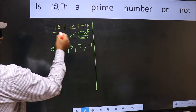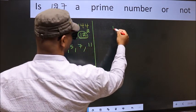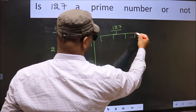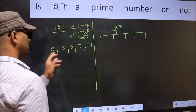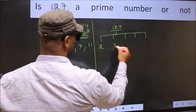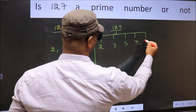Now for the given number, we should check divisibility by these numbers. That is 2, 3, 5, 7, and 11.